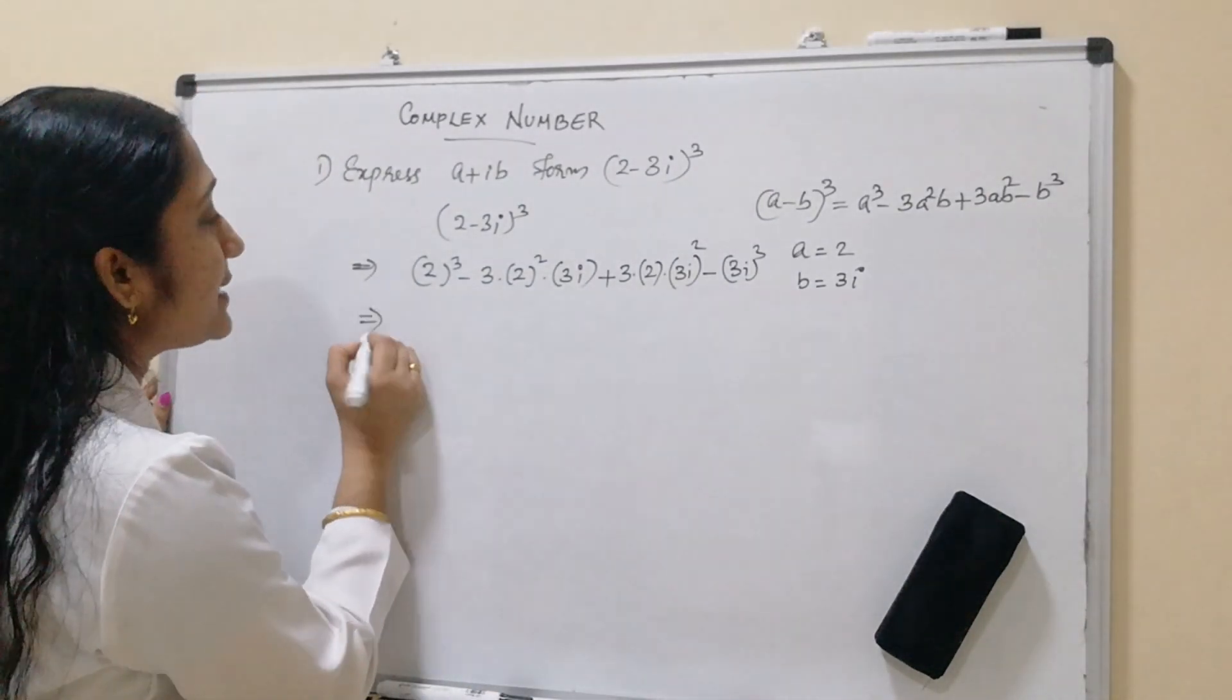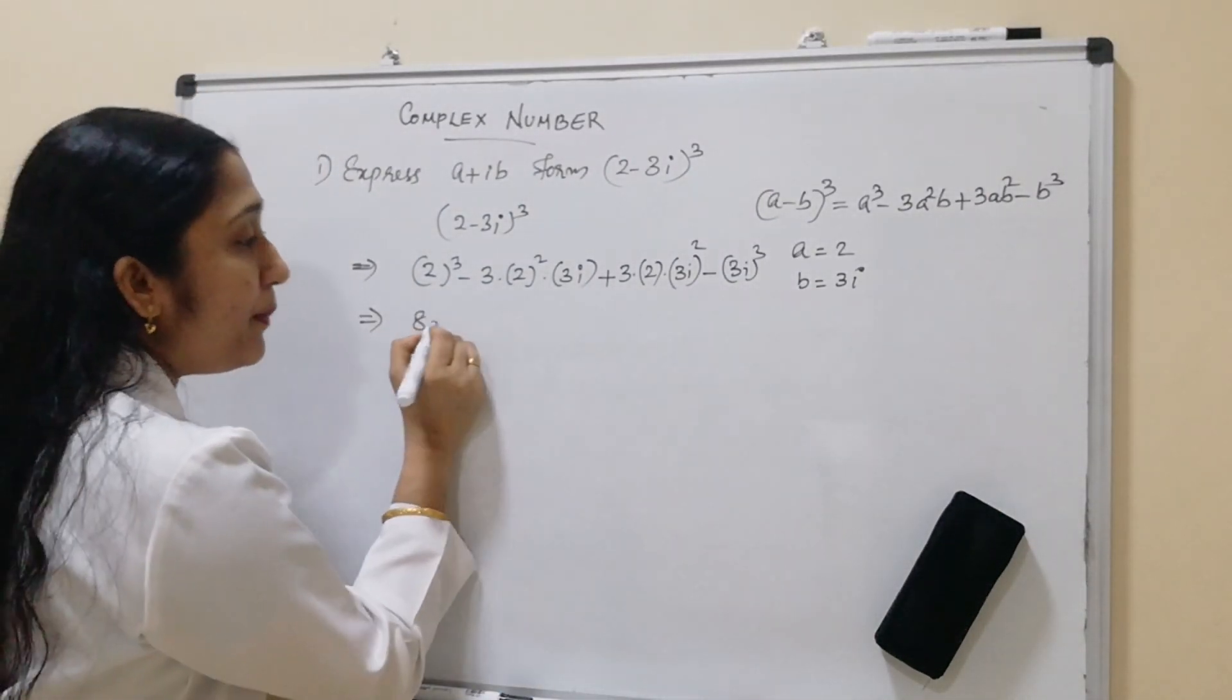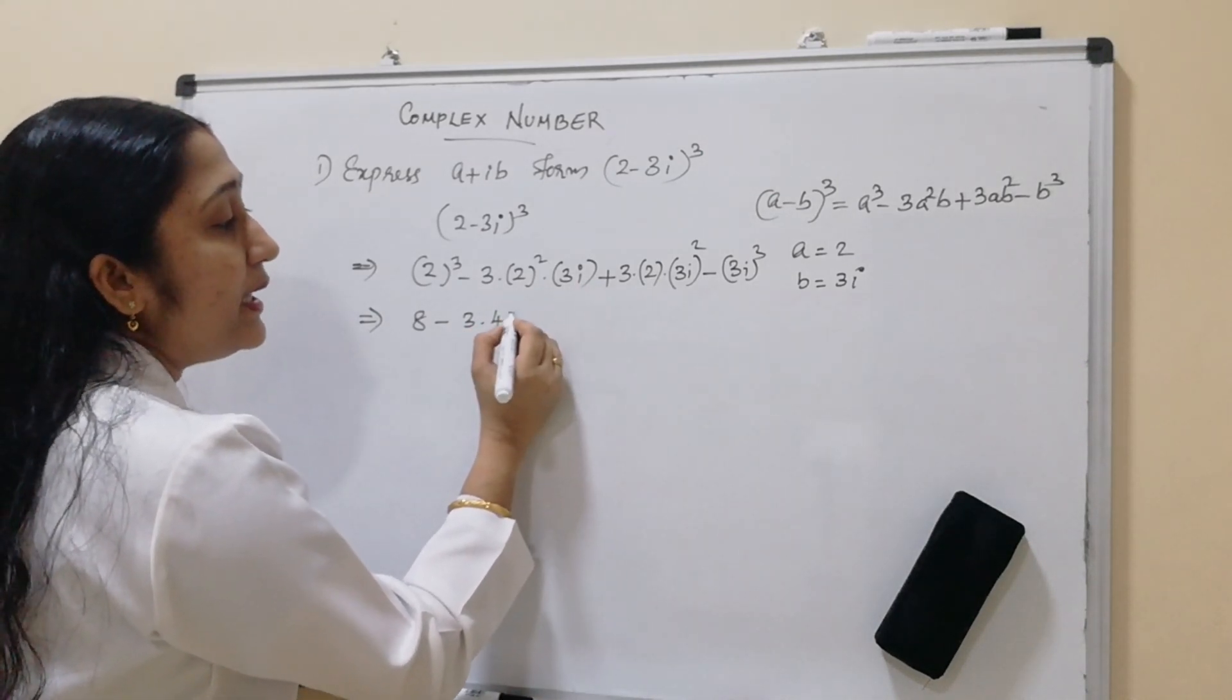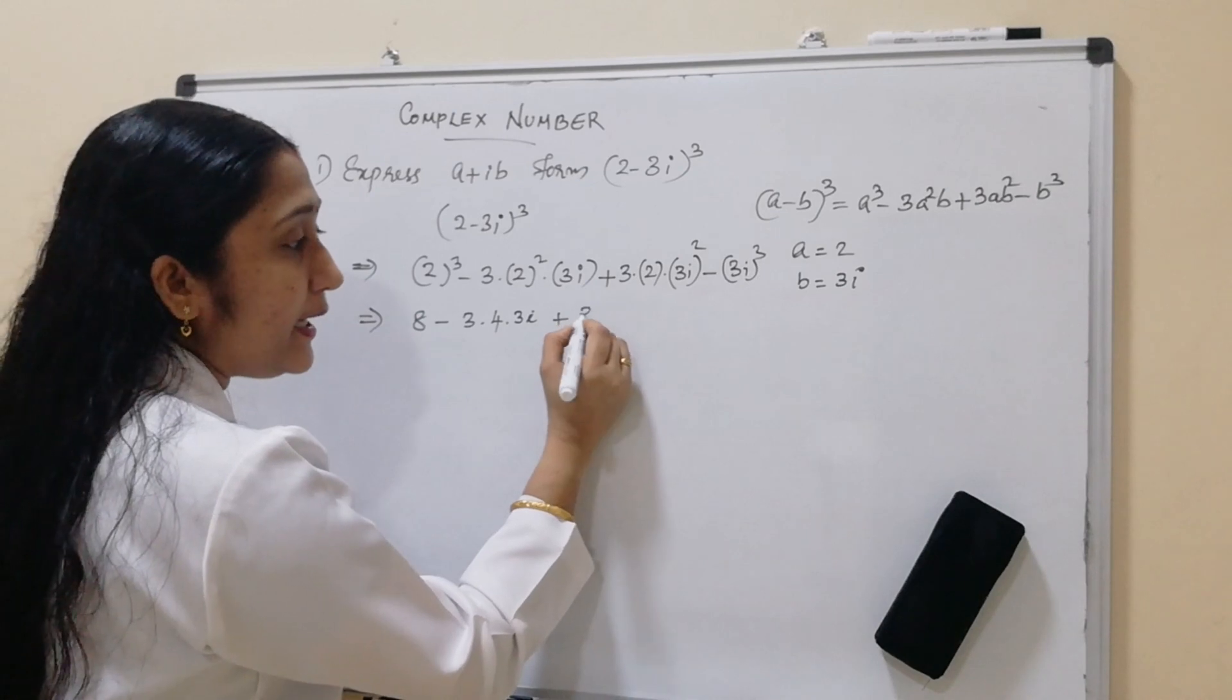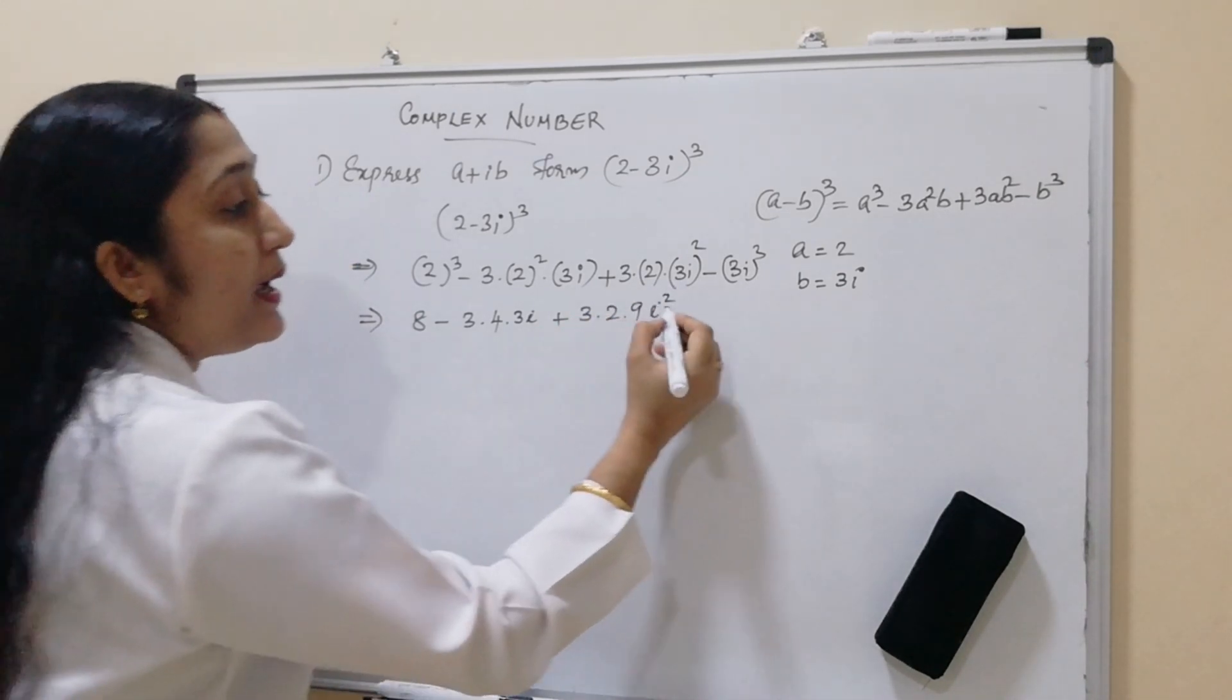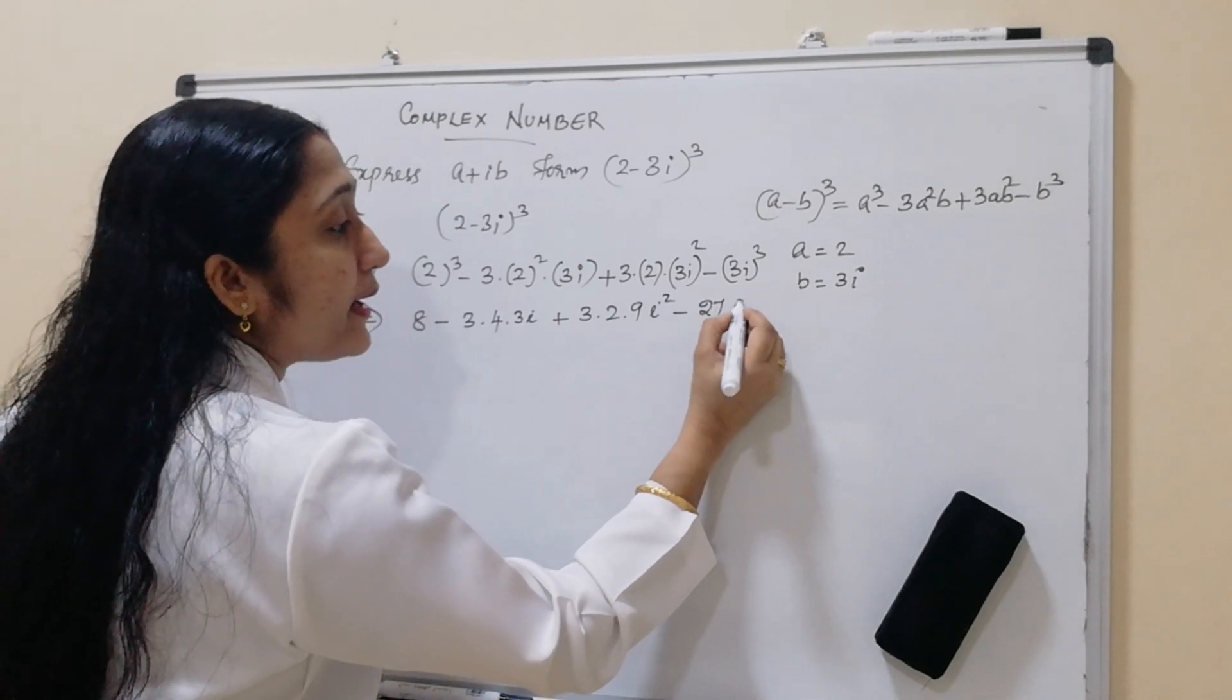So let us see. Next, 2 cube is 8 minus 3 into 4 into 3i plus 3 into 2 into 3 square, 9i square minus 27i cube.